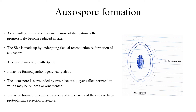Auxospore means growth spore. It may also be formed parthenogenetically. The auxospore is surrounded by a two-piece wall layer called perizonium, which may be smooth or ornamented. It may be formed of pectic substances from inner layers of the cells, or from protoplasmic secretions of the zygote.